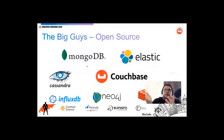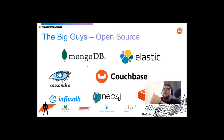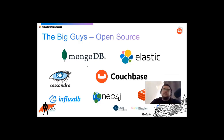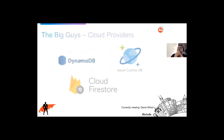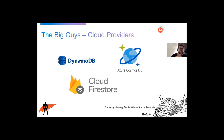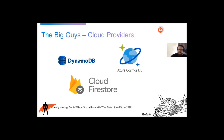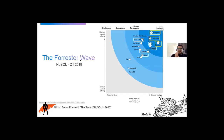Here are the big open-source players: MongoDB, Elastic, Cassandra, Couchbase, InfluxDB, Neo4j, and Redis. If you're considering using a NoSQL database, those are essentially the ones you should consider. For cloud providers, we have DynamoDB from Amazon, CosmosDB from Microsoft, and Firestore from Google. That's essentially how they are distributed and what the current offerings of those databases look like.